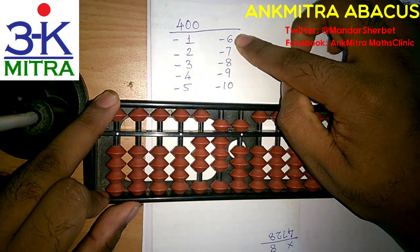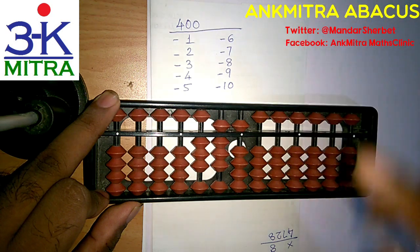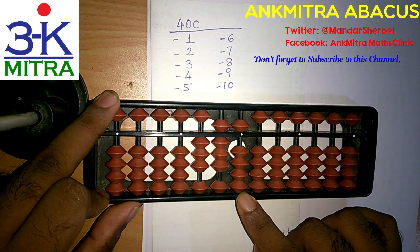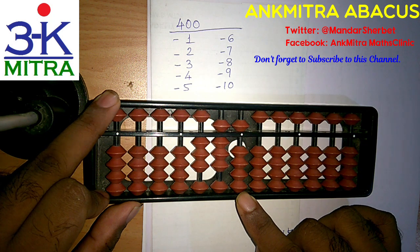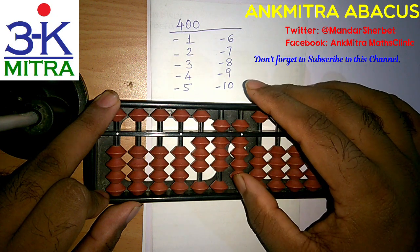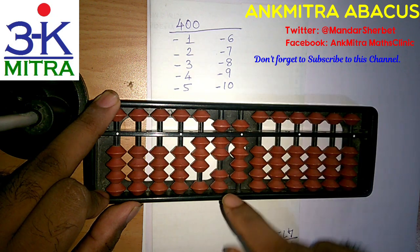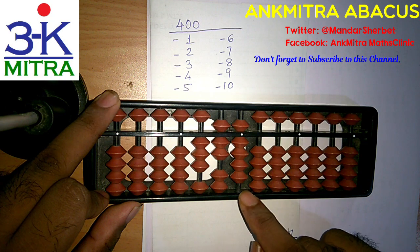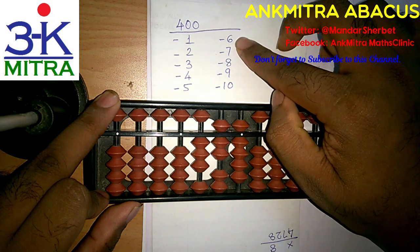Now coming to the subtraction of 6 on the units place. I don't have 6 bits available here to subtract, so I will use the big friend formula of minus 6 which is plus 4 minus 10. So addition of 4 is done directly and minus 10 is done on the next left rod. So subtraction of 6 is done.